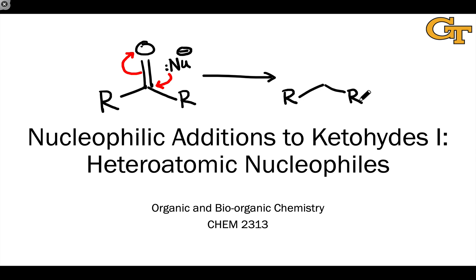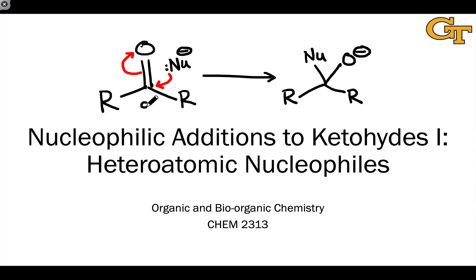I wanted to briefly revisit the addition to a polarized pi bond elementary step by a nucleophile. The mechanistic idea is that the nucleophile donates a pair of electrons to the electrophilic atom within a polarized pi bond — and in the C=O double bond, that's always the carbonyl carbon. If the nucleophile is anionic, this often leads to an alkoxide or alkoxide derivative with a negative charge on oxygen.